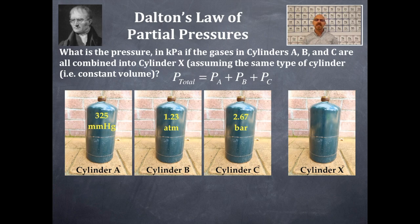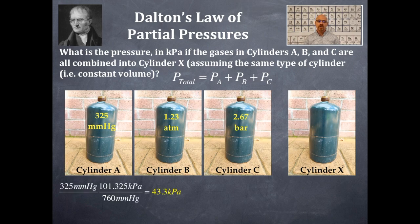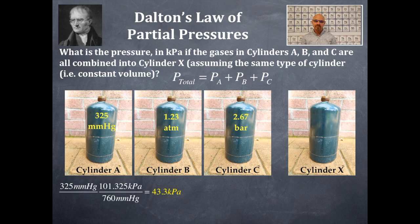In order to add up these partial pressures to get the total pressure, I need all units to be the same. The question asks for kilopascals, so I'll convert each into kilopascals. Converting 325 millimeters of mercury: using 760 mmHg = 101.325 kPa, that gives 43.3 kilopascals for cylinder A. Cylinder B is 1.23 atmospheres; using 1 atm = 101.325 kPa, that gives 125 kilopascals.